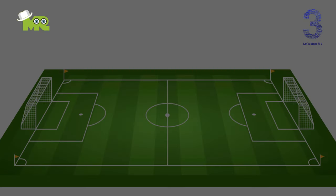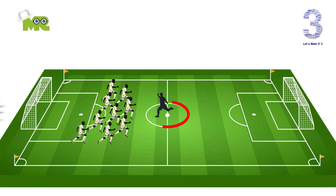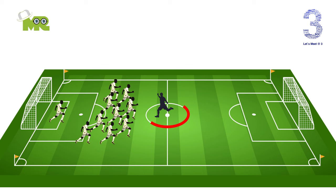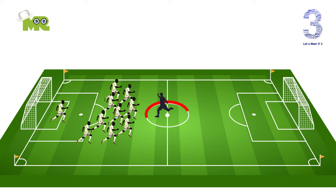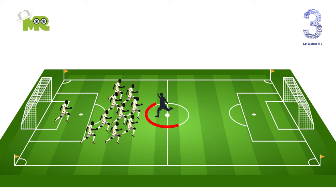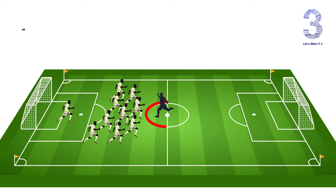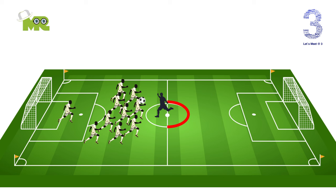At the start of a soccer period, or after a goal, there is a kickoff from the center circle. At the kickoff, all of the soccer players must be on their side of the field. Only the player kicking off is allowed inside the center circle. After the kickoff, the ball will be in play until it goes out of bounds or a referee calls a penalty.